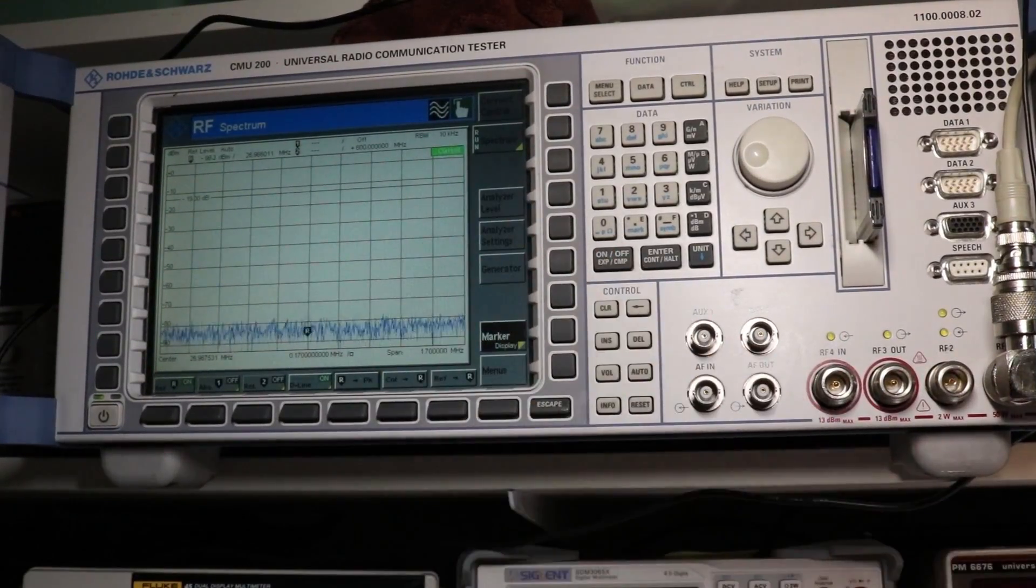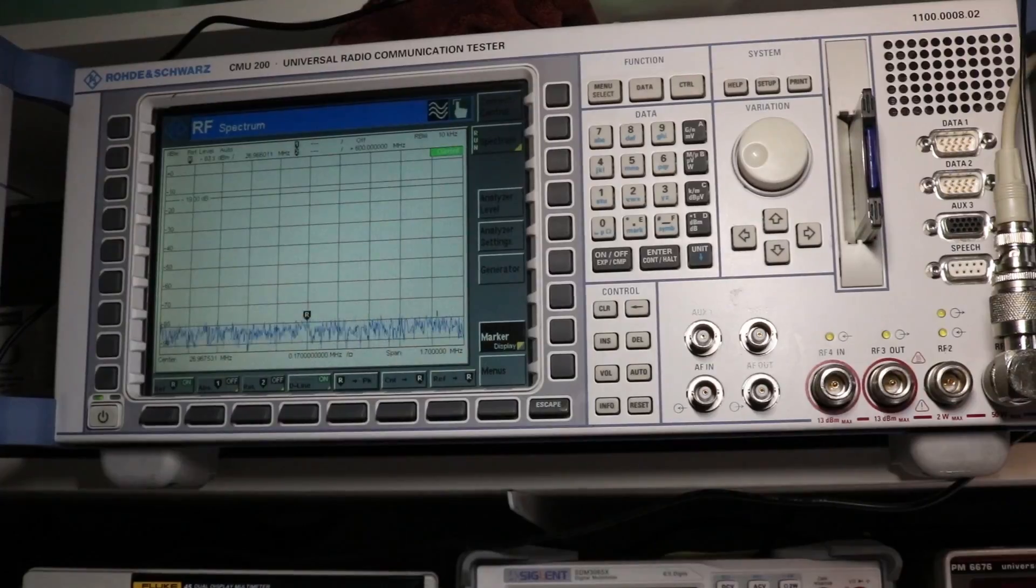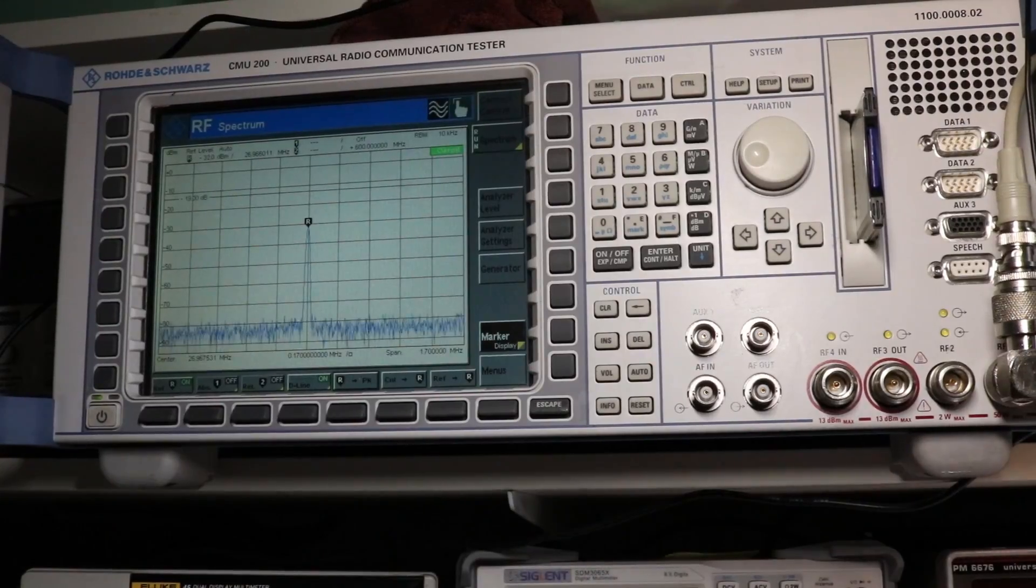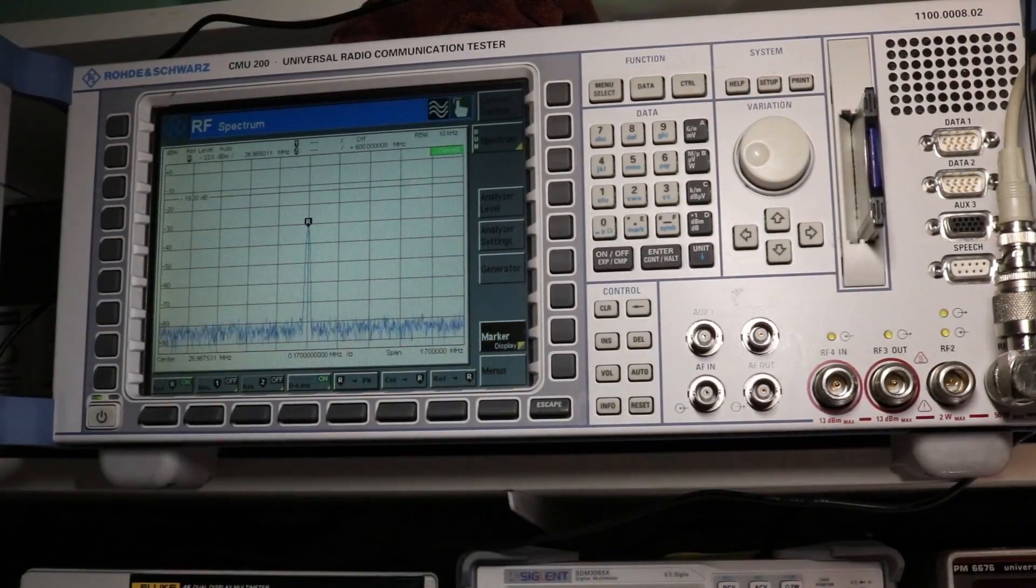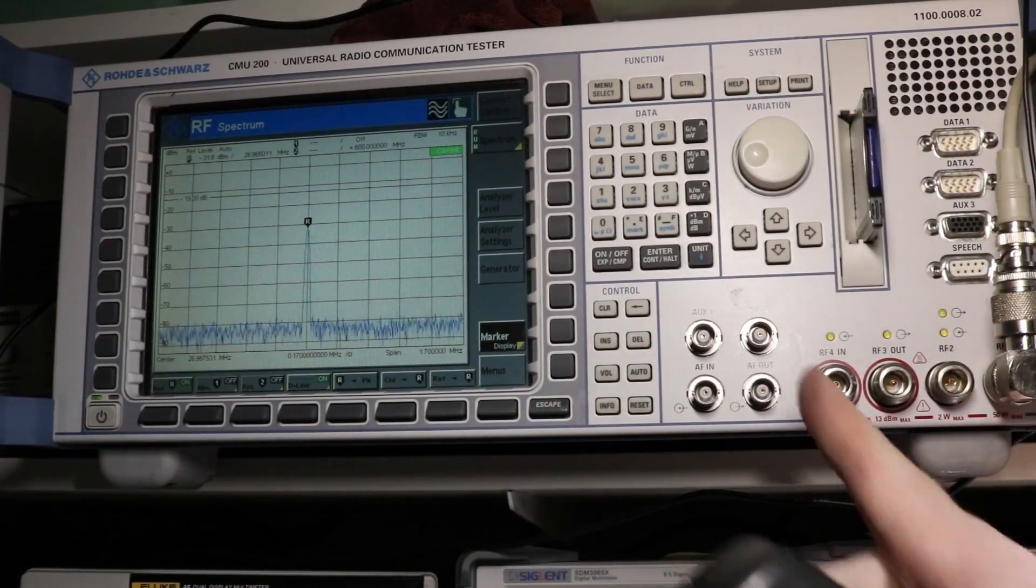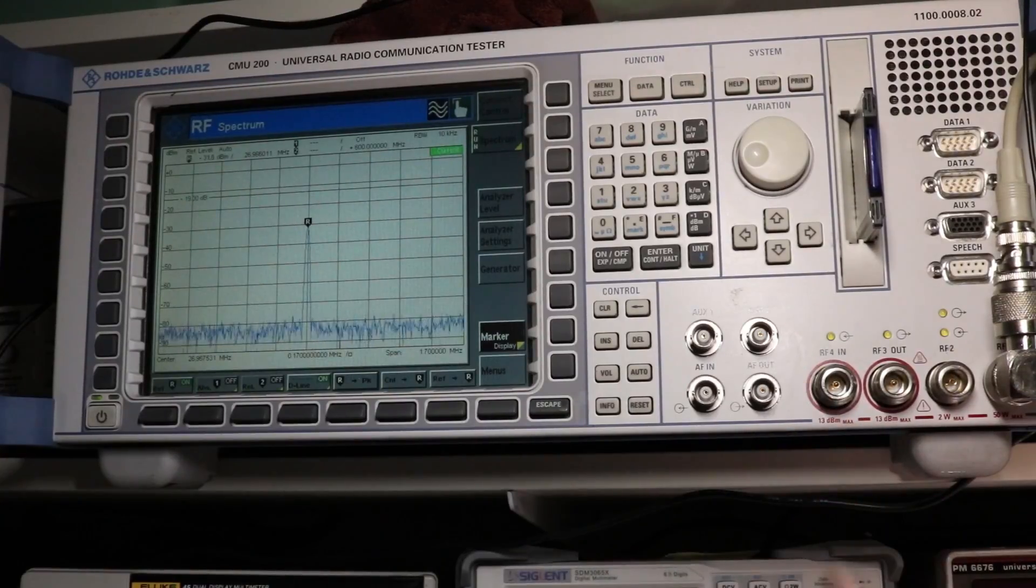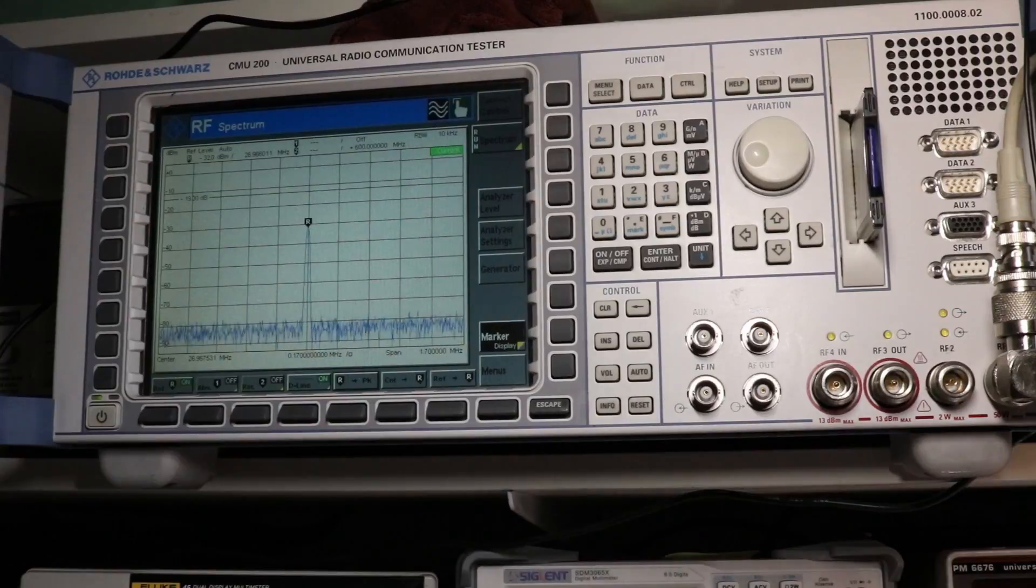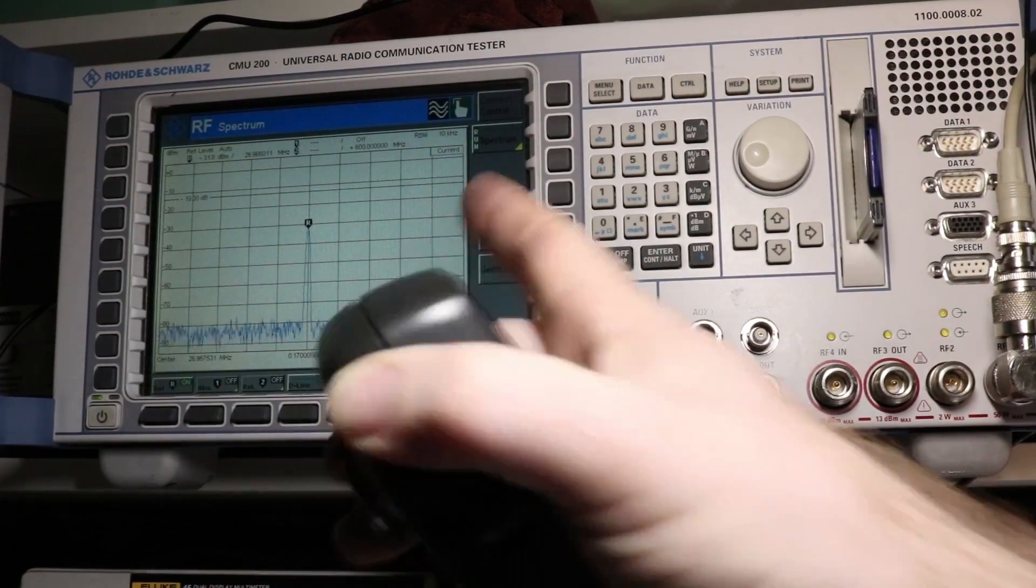I've got the CMU 200 fired up. I've got it set up with this radio in here - I'm just doing a basic transmit test. There's a signal, and I'll do the marker. I think the frequency reference in this has drifted off again even though I've already adjusted it. It's about one kilohertz off, which is interesting.